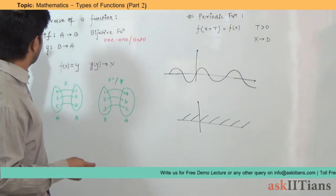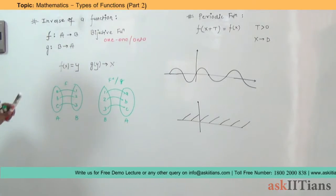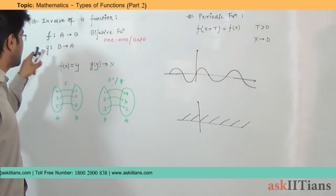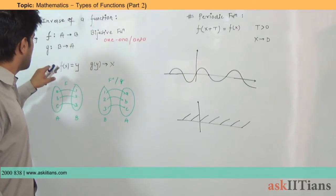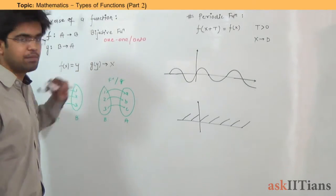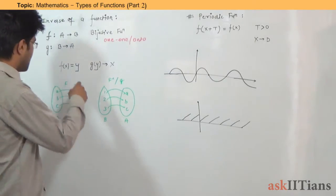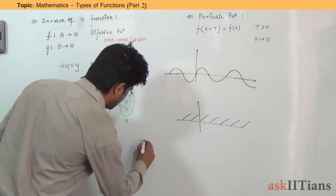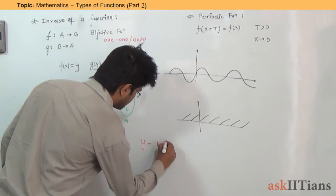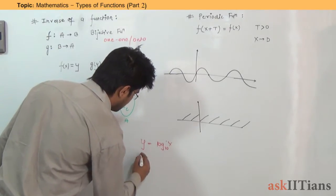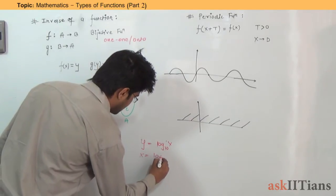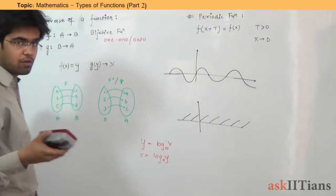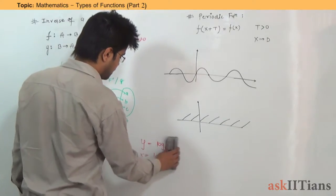If f is a function from A to B and f is a one-one onto function, then there exists a unique function g such that g goes from B to A. If f(x) = y, then g(y) = x. That means we have interchanged x and y. For example, if the function is y = log₁₀x, then the inverse function becomes x = log₁₀y — the x and y have been swapped.